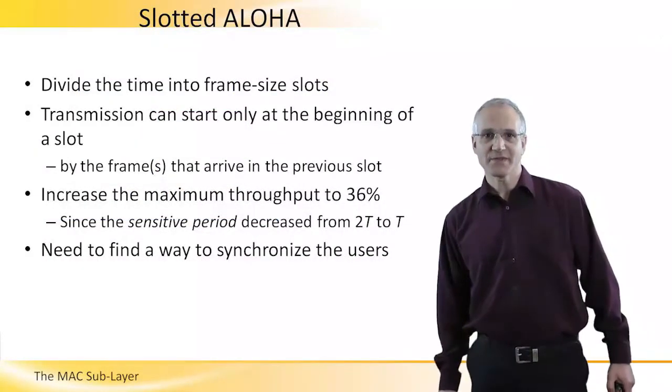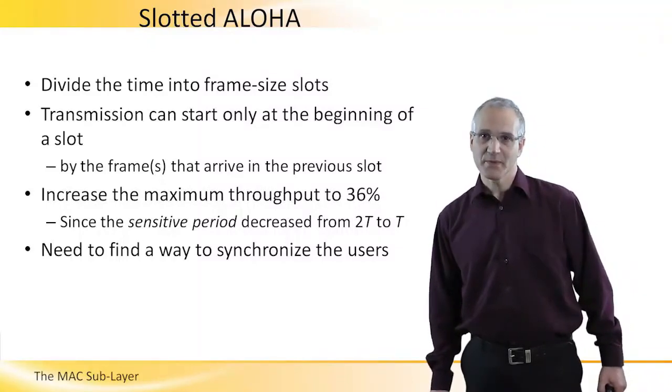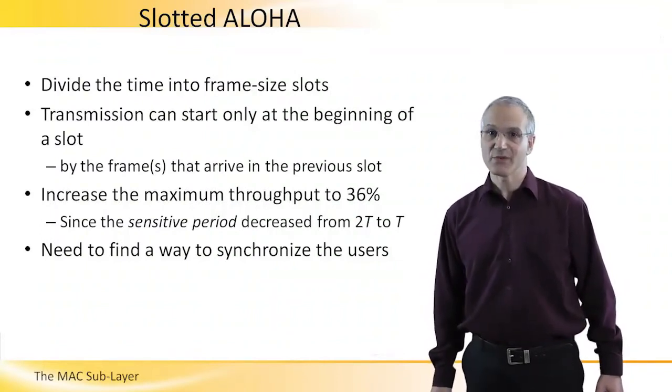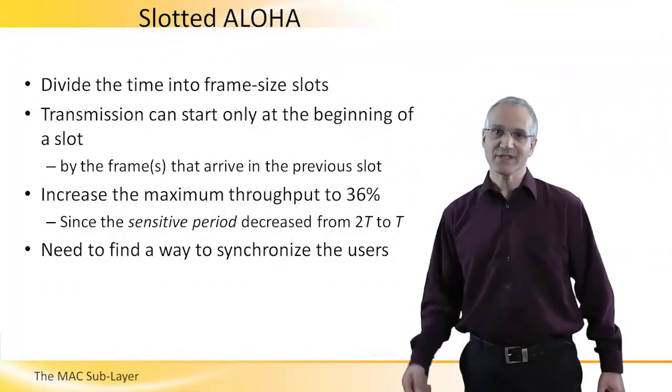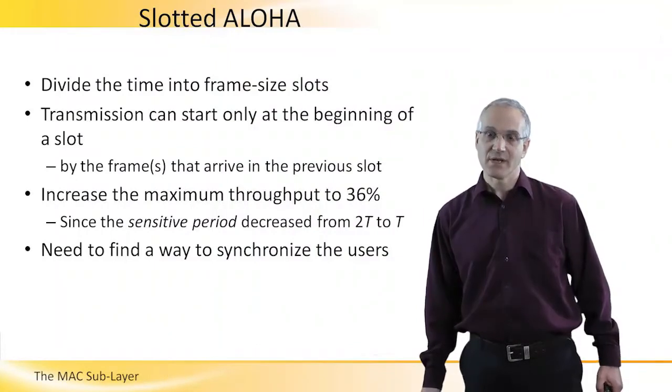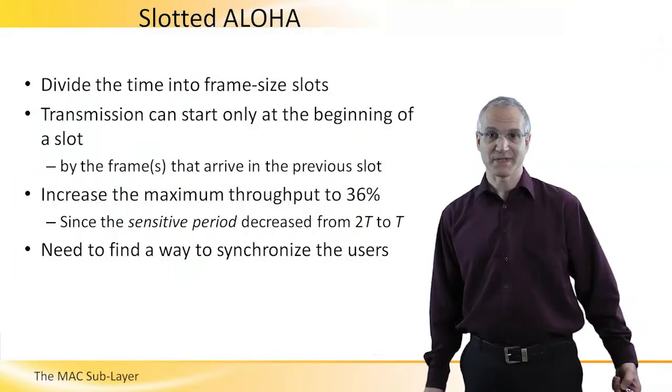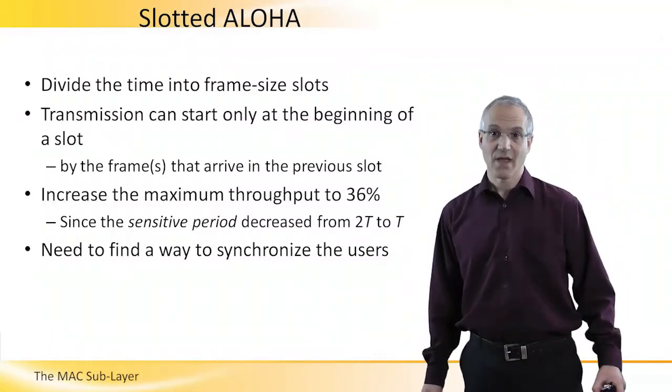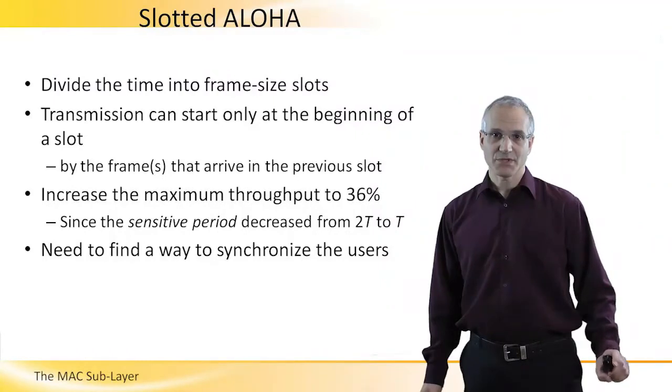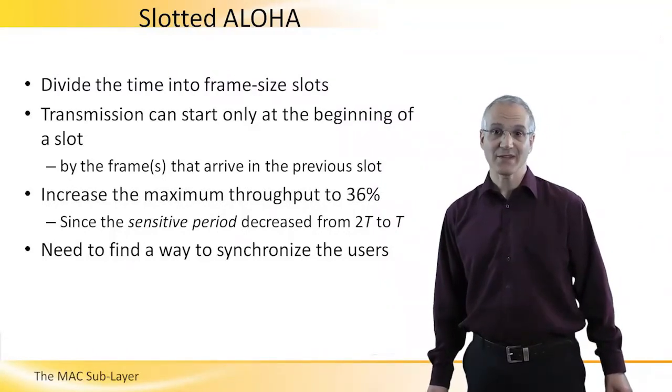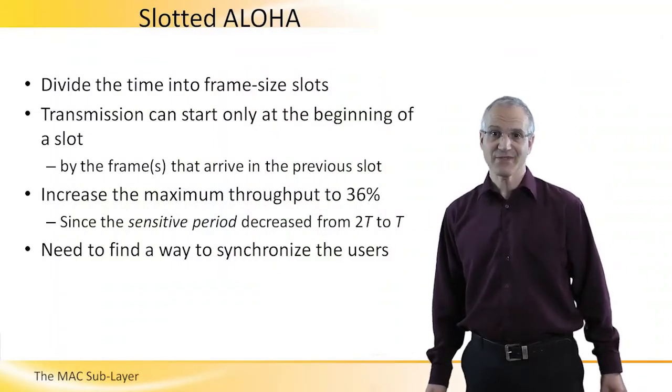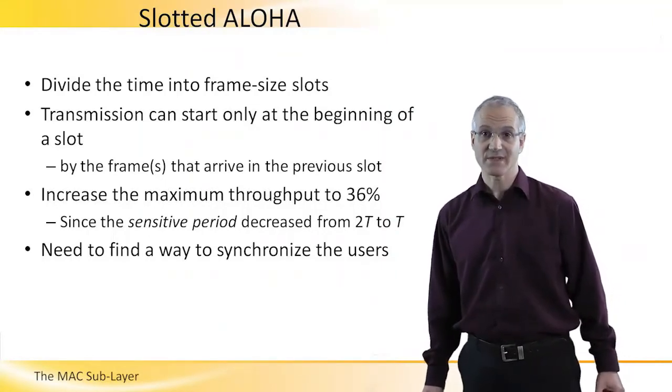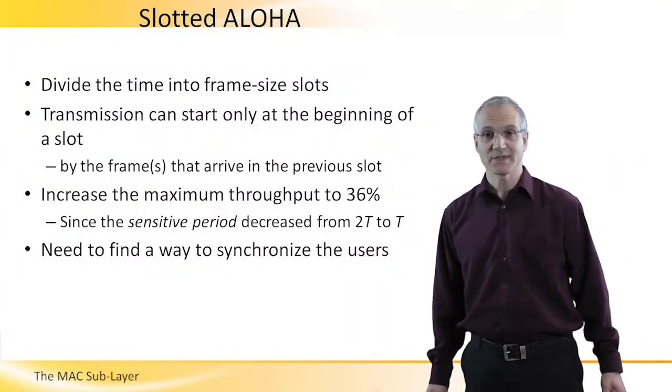18% throughput is really low. So people came out with an improvement for the Aloha called slotted Aloha. The idea here is that time is divided into frame size slots, and transmission can only start at the beginning of a slot. This means that all the frames that are scheduled to be transmitted at some time during the previous slot will actually transmit at the beginning of the next slot. This simple change increased the maximum throughput of Aloha from 18% to 36%. This is because the sensitivity period now decreased from 2T to T. However, this requires us to synchronize the user to the beginning of the slots, which is not always a simple task.